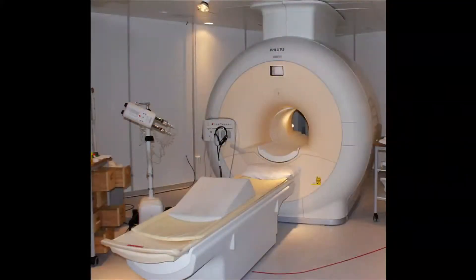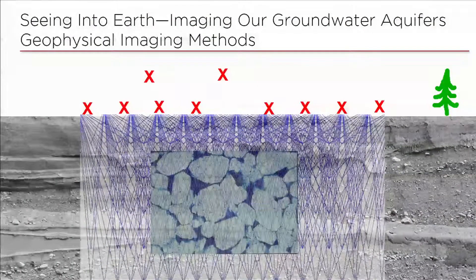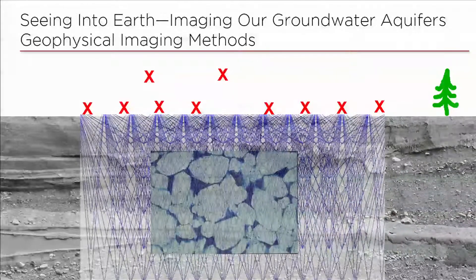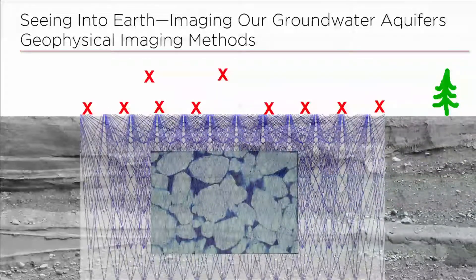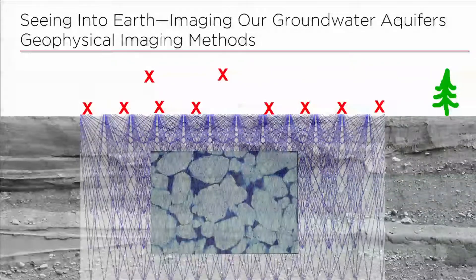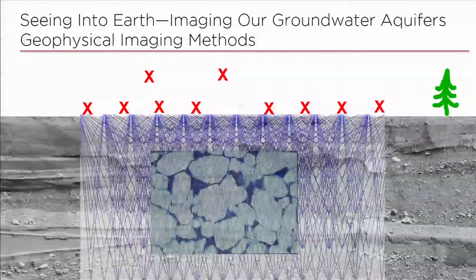What do we have now? We have medical imaging to see inside people, to image inside humans to manage human health. My passion is seeing into Earth — imaging our groundwater aquifers to manage our groundwater resources. And we can do this using geophysical imaging methods, where we deploy sensors on the ground surface or in helicopters or in satellites, and we use these sensors to get images of what's happening in our groundwater aquifers.